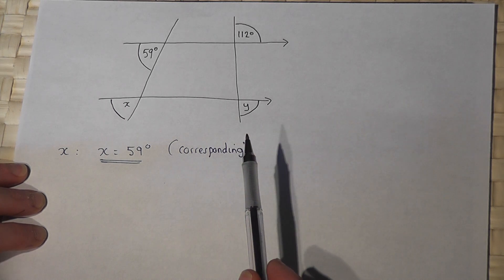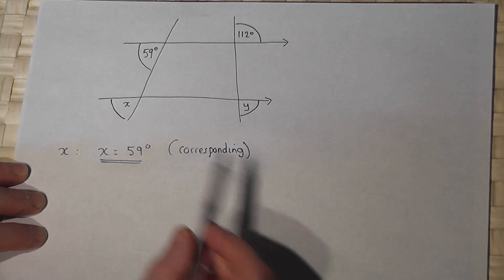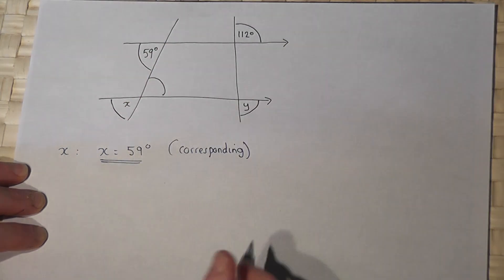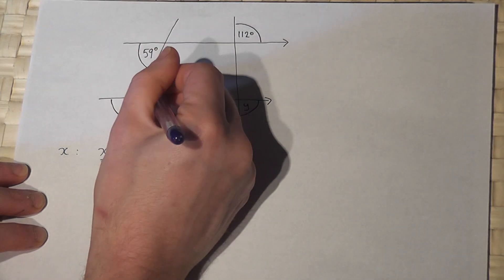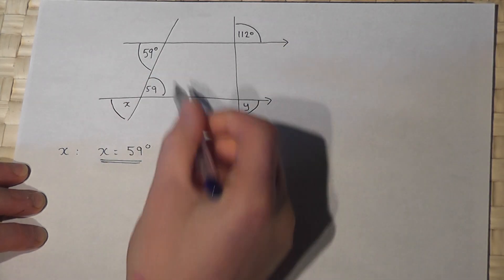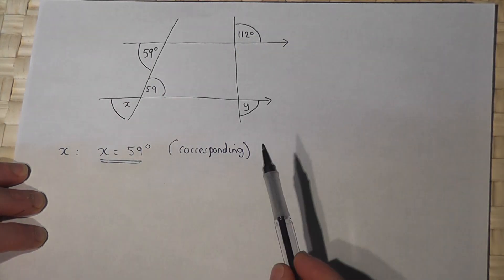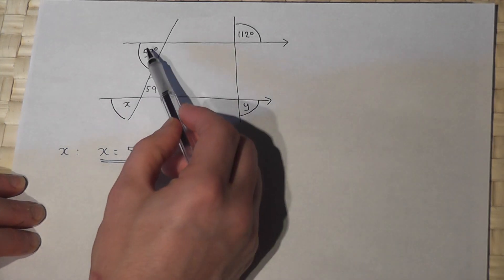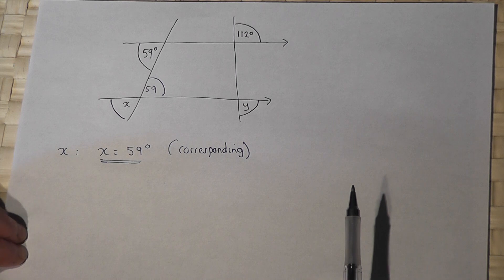There is one other word called alternate angles and that's the angle which is on the other side of the line. So this one here, for example, would be also 59 because these two angles are alternate or opposite. So this, this, and this are all the same angle.